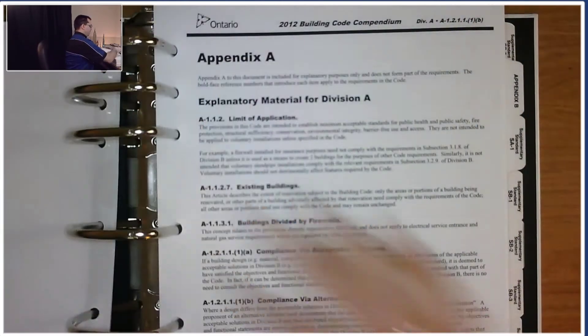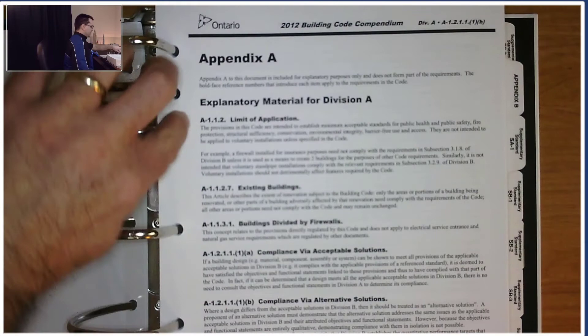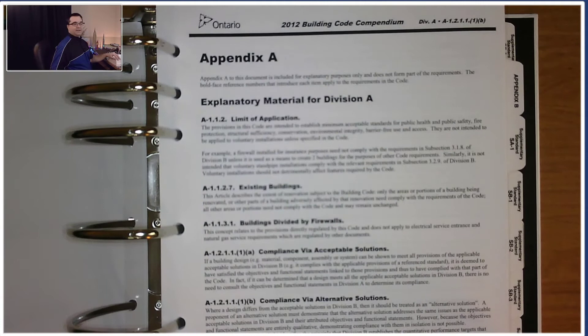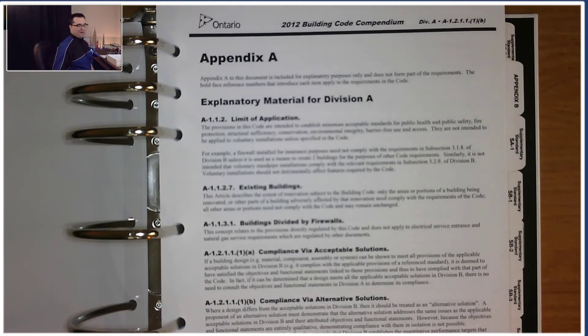We have Volume 2 of the Building Code right here. When you open it up, if it's been set up correctly, you'll notice there's a tab here called Appendix A. So I find Appendix A. Let me give you a super quick description of it. The way that Appendix A is laid out is that except for these A's in front of everything, the references match their corresponding locations under Division B Volume 1.